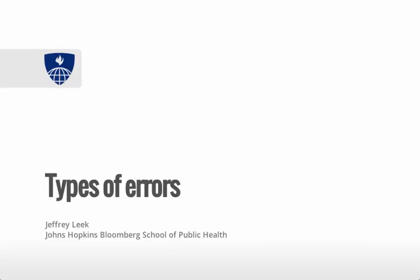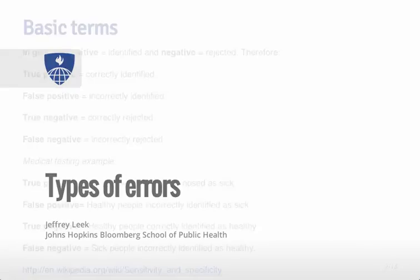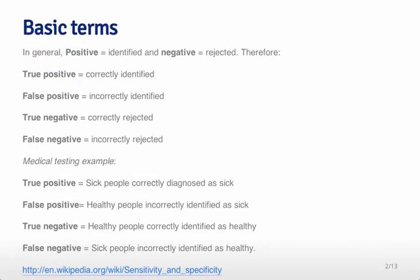This lecture is about the types of errors and the ways that you will evaluate the prediction functions that you generate during this class. We're going to focus on the types of errors that you can make when you're doing a binary prediction problem, where you're trying to predict things into one of two groups.